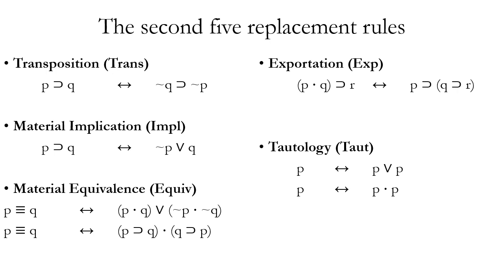Material equivalence allows you to go back and forth between a triple bar and either a disjunction of conjunctions or a conjunction of conditionals. You have to match the exact order of those propositions and operators. So if you go from a triple bar to a disjunction, the first disjunct has to be a conjunction of those two propositions, and the second disjunct has to be a conjunction of their negations. If you move to the dot from a triple bar, it has to be the first proposition horseshoe the second, and the second horseshoe the first. And as with all other rules, you can go in the opposite direction as well.